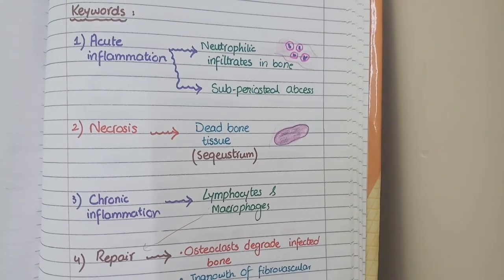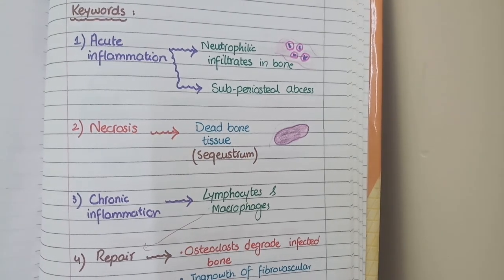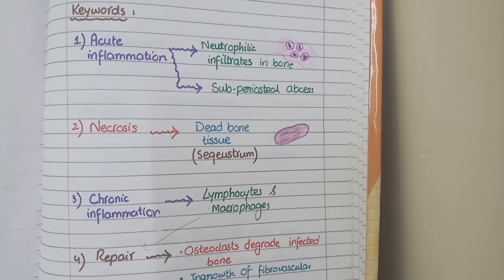These are the morphological features of acute and chronic osteomyelitis. Hope this concept is clear to you now.